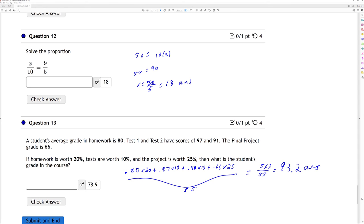The last one here. Question 13. A student's average grade in homework is 80. Test 1 and test 2 have scores of 97 and 91. The final project grade is 66. If homework is worth 20%, tests 10% each, and project 25%, what is the student's average? So of that homework, they captured 80% of it.